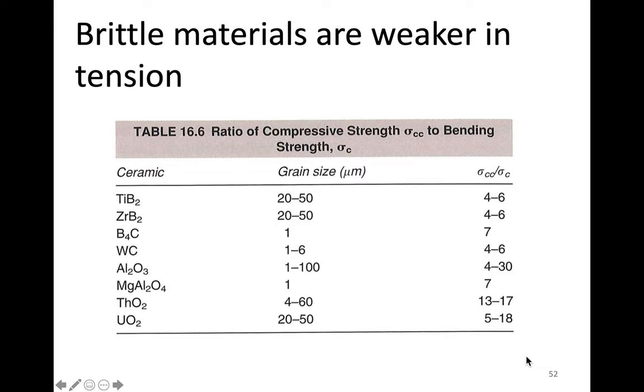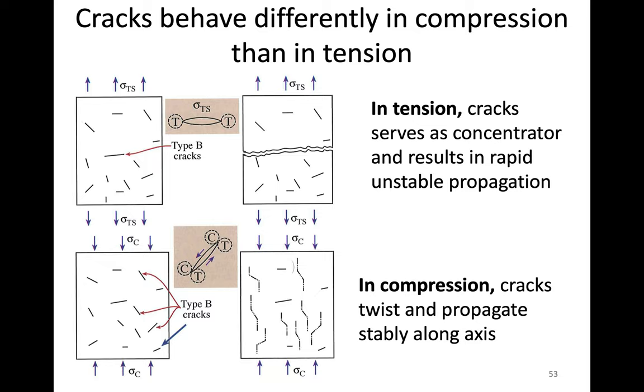Brittle materials are weaker in tension, and this goes back to the flaws. This table shows the ratio of compressive strength σ_c to bending strength σ_b. We see that these various ceramics all have greater than one ratios, meaning the compressive strength is much higher—four to six times, seven, up to thirty times higher. The grain size is shown here because it does affect the strength in these brittle materials.